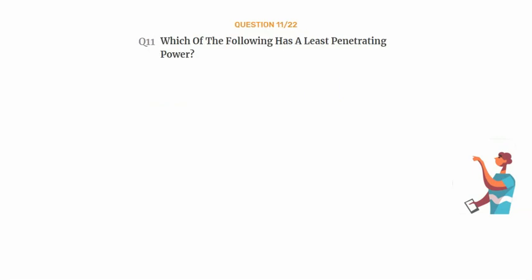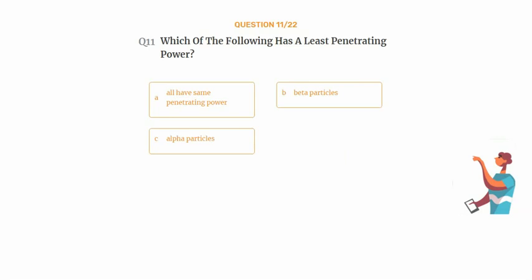Question number 11. Which of the following has the least penetrating power? Option A: All have same penetrating power. Option B: Beta particles. Option C: Alpha particles. Option D: Gamma rays.